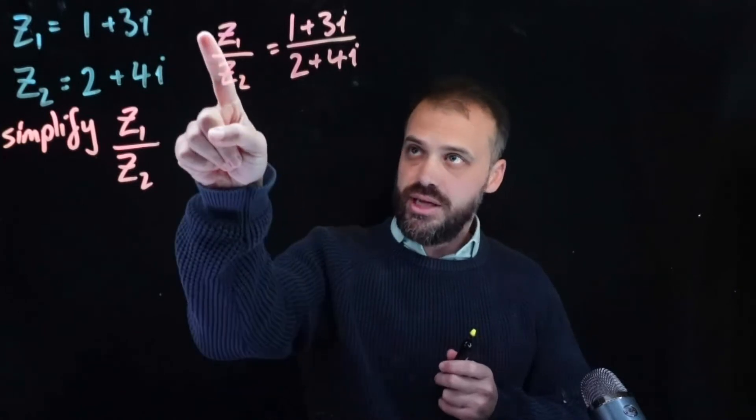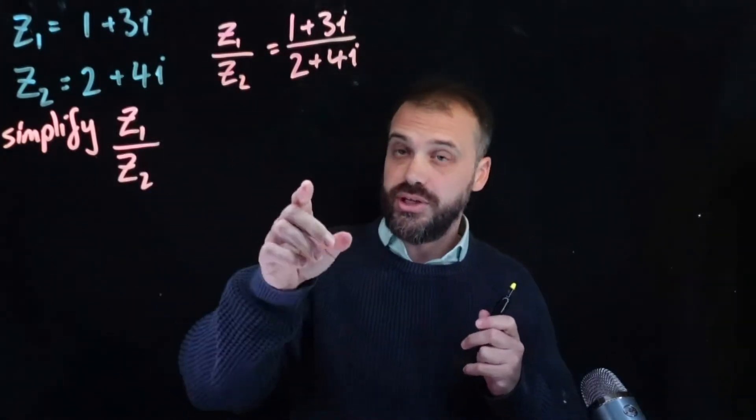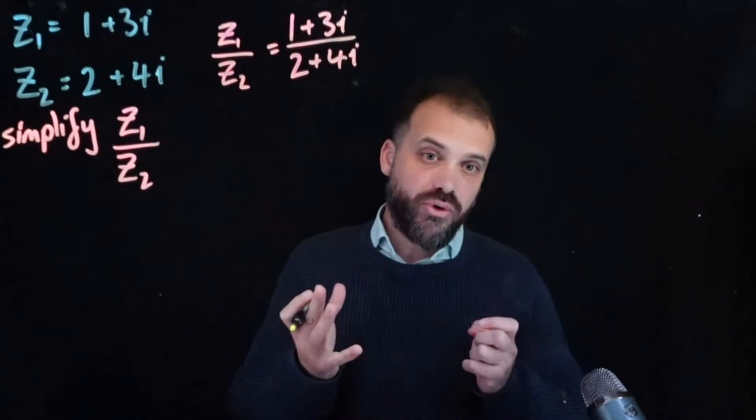So we start right here, z1 divided by z2 is equal to whatever z1 is, 1 plus 3i, and whatever z2 is, 2 plus 4i.